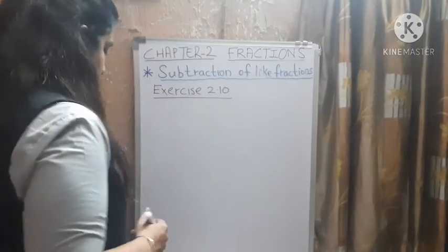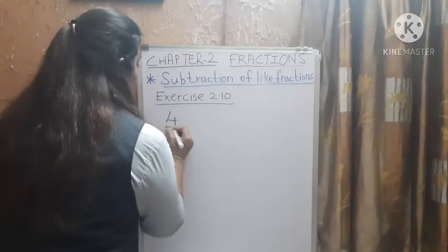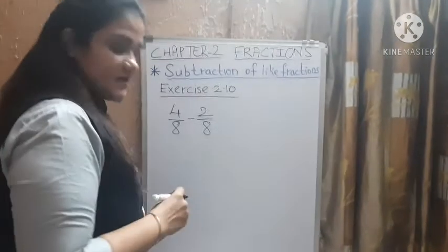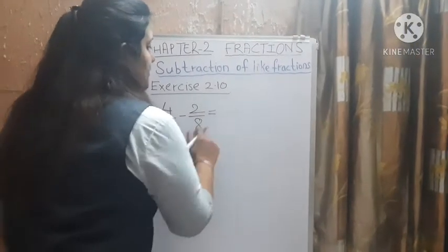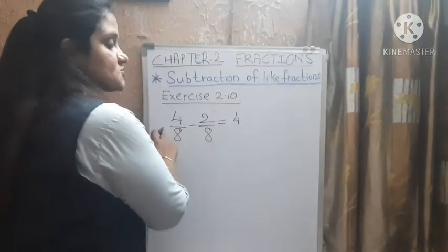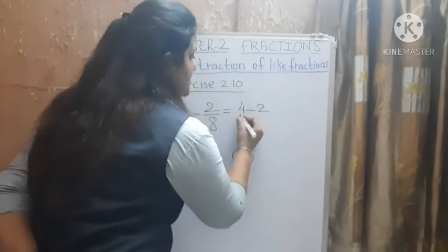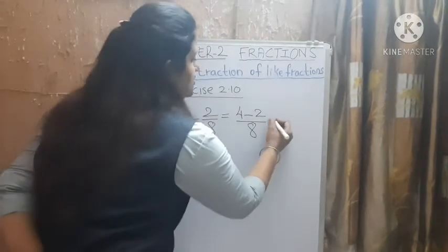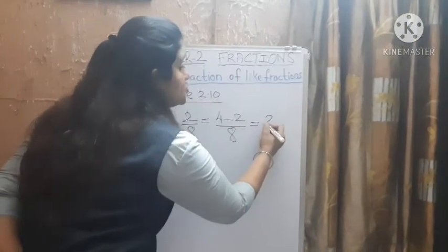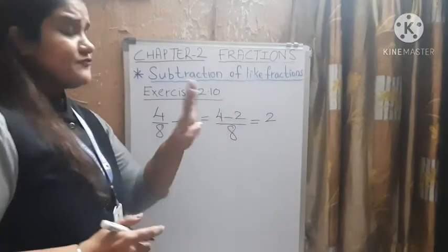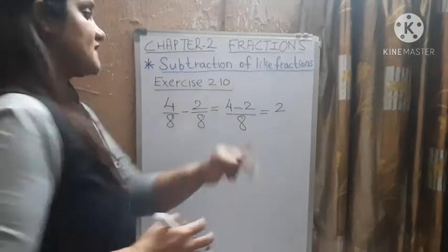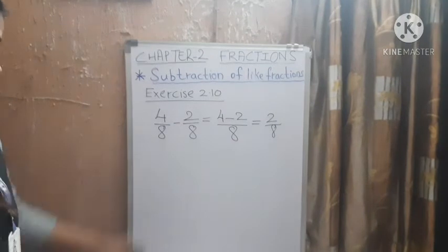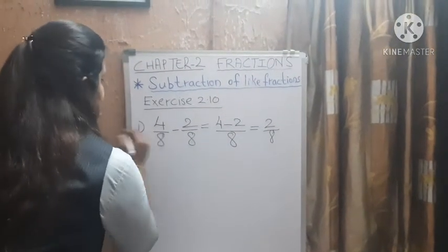For an example, I have written 4 by 8 minus 2 by 8. What you are going to do: take the denominator as common — denominator same hai niche. So 4 minus 2: 4 on your finger, 2 close — 1, 2 — what is left? 2. Your answer is 2 by 8. Now the second example: 7 by 10 minus 3 by 10.